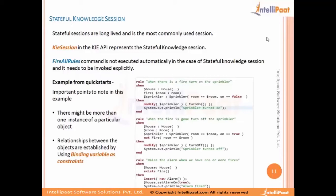To limit execution to only related objects — for example, if there is fire in a room I cannot sprinkle on all rooms, only the one with fire — we use binding variables to do that condition check. Otherwise the sprinkler would be executed on a different room where there is no fire at all. So we need to find out which room has fire, and binding variables are the only way to do it.